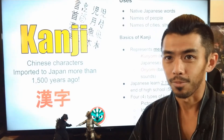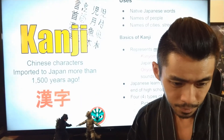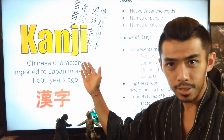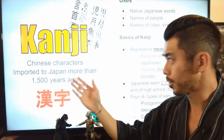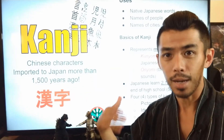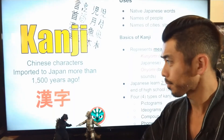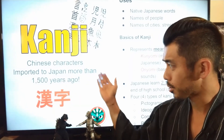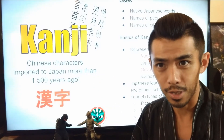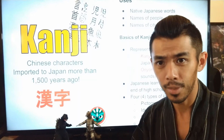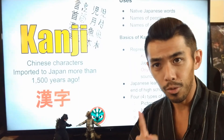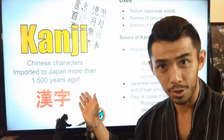Kanji basically has a Chinese origin — it's essentially Chinese characters that the Japanese adapted into their writing system. Kanji was actually imported to Japan more than 1,500 years ago, so it's a very old writing system. In fact, hiragana and katakana are both born from kanji, so kanji was actually first.